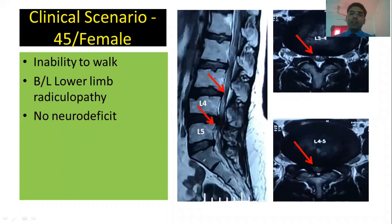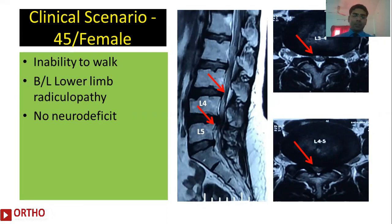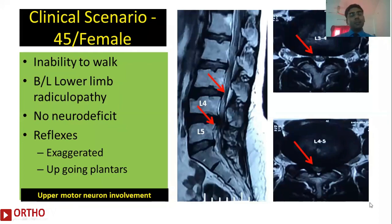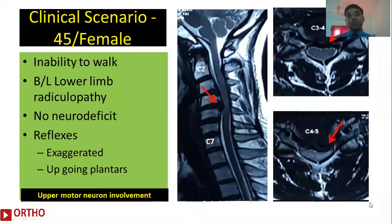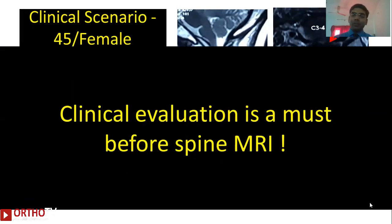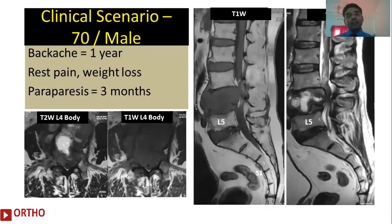Let me start my today's talk with this clinical scenario: a 45-year-old female who had difficulty in walking and significant lower limb pain came to my clinic with a lumbar spine MRI. She was already scheduled for lumbar spine surgery. When I examined her, I realized she had significant upper motor neuron signs, so I sent her back for a screening MRI which showed significant compression in the cervical spine also, which also required surgery. This would have been missed without a proper clinical evaluation — the first message is that proper clinical evaluation is a must before you consider spine MRI.